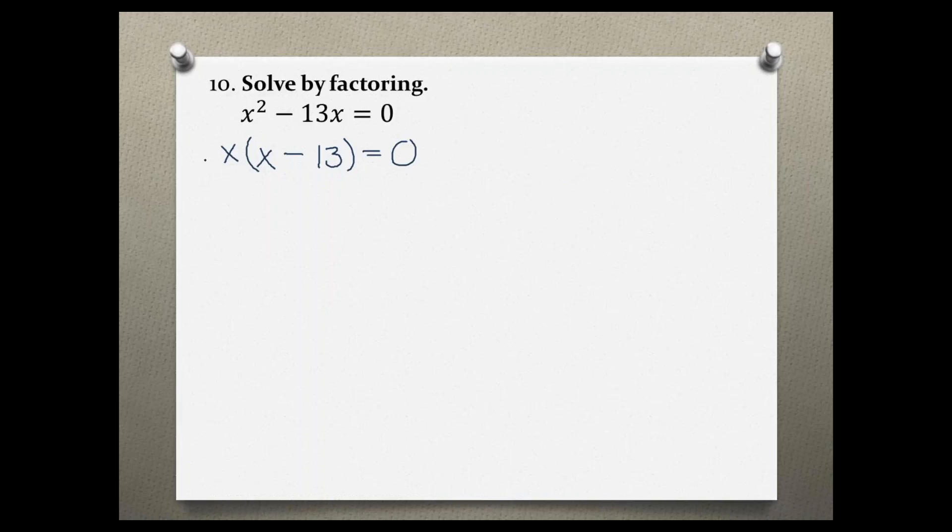So is there another method we can use? These are two terms but none of them are perfect squares, so this would be it. The only thing we were able to do was pulling out the greatest common factor. So we're going to take each part and apply the zero product rule.